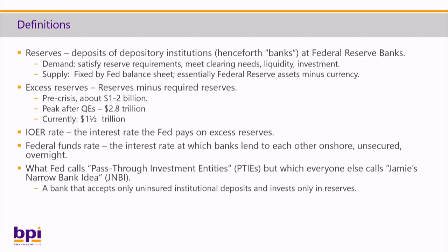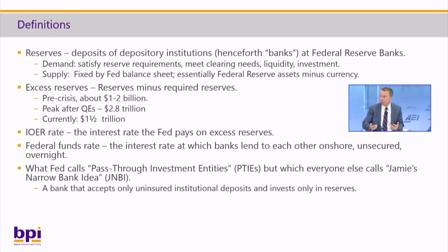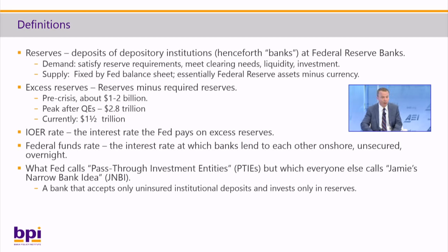Some definitions to level set: reserves are deposits of depository institutions at Federal Reserve Banks. The demand for reserves — banks hold reserves to satisfy their reserve requirements, to meet their clearing needs, as these are their checking accounts and things come in and go out. They hold them as a liquid asset — they're the perfect liquid asset, available instantly at a known amount. And now that the Fed pays interest on reserves, banks hold them as an investment. The supply of reserves is fixed by the Fed balance sheet — the Fed creates reserves, those reserves find their way into the banking system, and prices adjust to make banks hold them willingly.